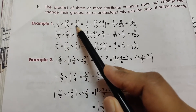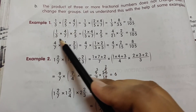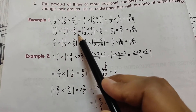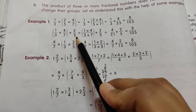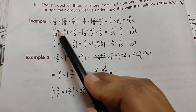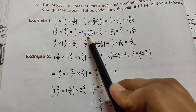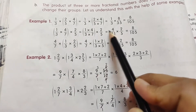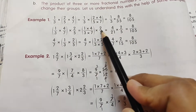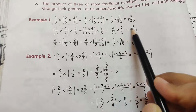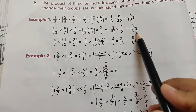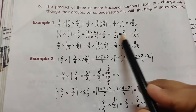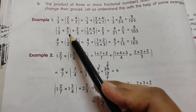Now if 1/3 and 4/7 are grouped together and multiplied by 2/5, first solve the bracket: 1 multiplied by 4 is 4, 3 multiplied by 7 is 21, giving 4/21 multiplied by 2/5. Then 4 multiplied by 2 is 8, and 21 multiplied by 5 is 105, giving 8/105 — the same result.